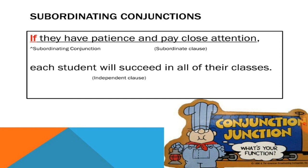Let us see this example: IF they have patience and pay close attention. The sentence starts with the conjunction IF, marked in red. This is the subordinating conjunction and the entire underlined clause is the subordinate clause. It is dependent on the principal clause coming next for its meaning — this is incomplete in itself. If I tell you 'if they have patience and pay close attention,' it does not make sense alone. It depends on the independent clause: 'Each student will succeed in all of their classes.' Therefore, IF is the subordinating conjunction.